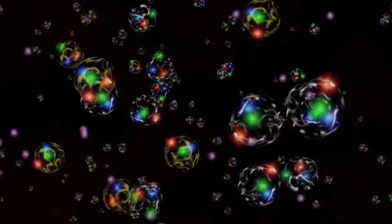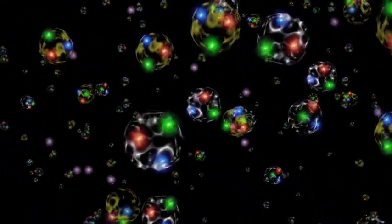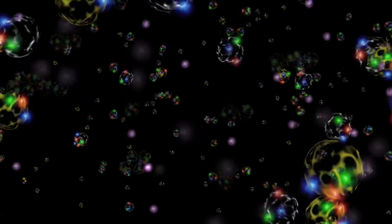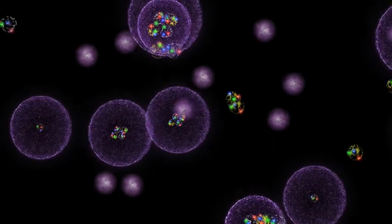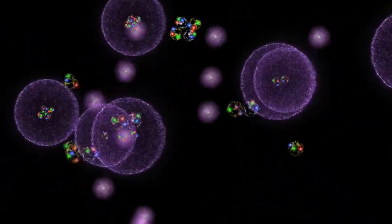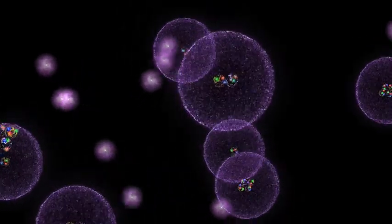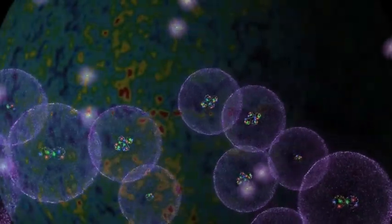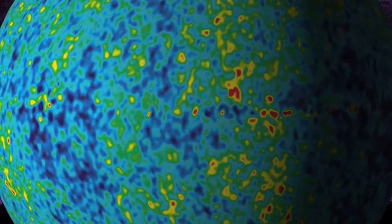After about 380,000 years of expansion and cooling, charged particles got together to form neutral atoms. And suddenly the photons that were bumping into charged particles every second or two were free to zip unhindered across space. This is the origin of the cosmic microwave background that we see today.